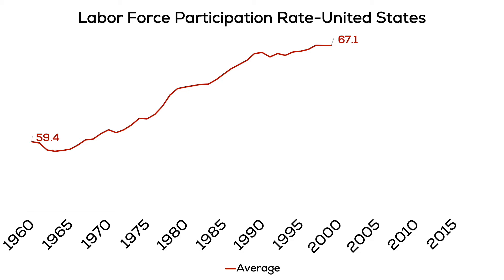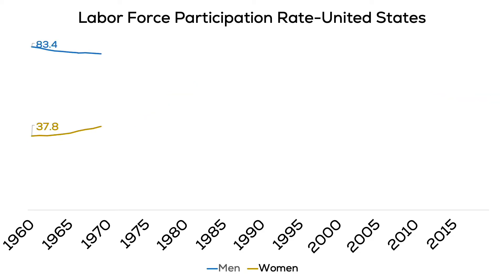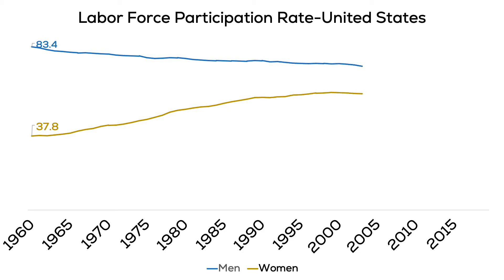We're looking at the overall labor force participation rate in the US since 1960. The labor force participation rate starts at 59% in 1960 and over the next 40 years continues to grow, reaching a high of 67% in 1990 and 2000. Since then, however, the labor force participation rate has been declining.